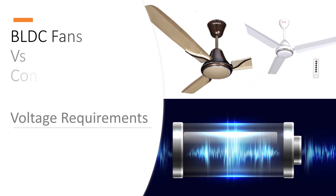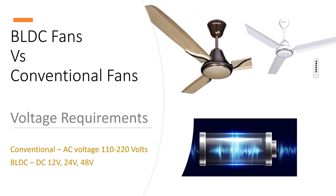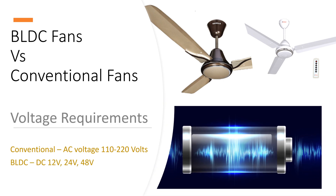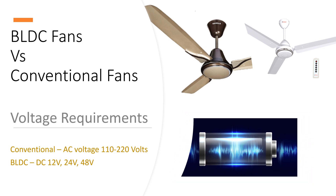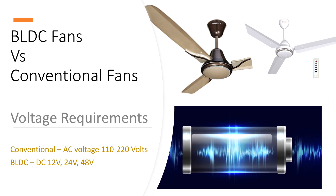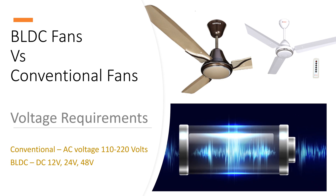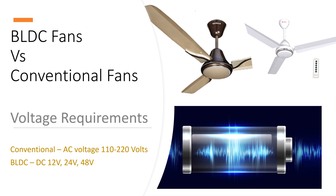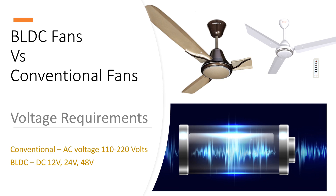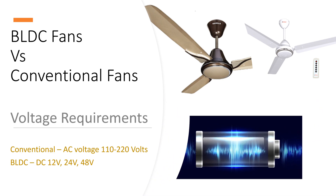Voltage requirements. Conventional fans directly take the mains voltage of 110-220 volts depending on region. However, BLDC fans have a switching power supply that steps down the high AC voltage to a low DC voltage, such as 12 volts, 24 volts, or 48 volts, and feeds it into a BLDC motor controller to run the BLDC motor.